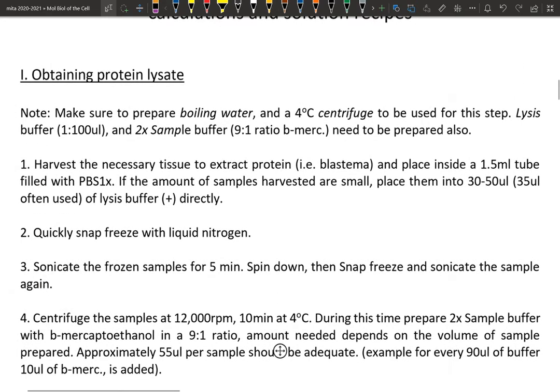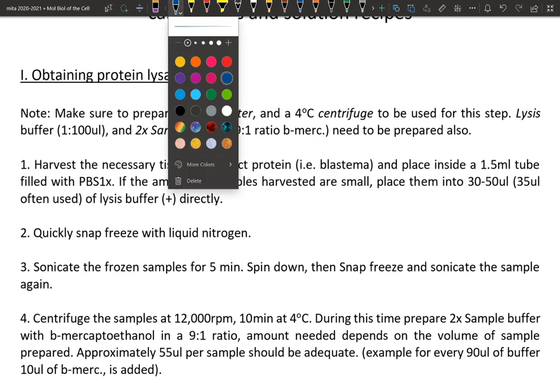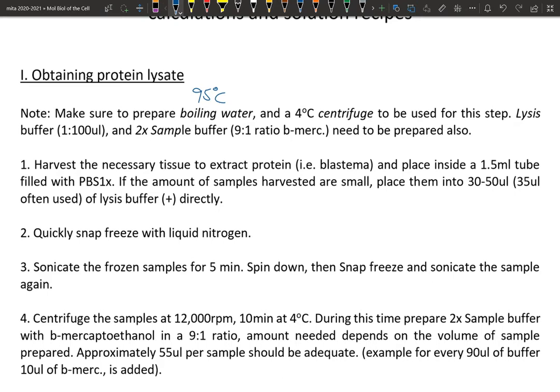The first thing is obtaining a protein lysate. Beforehand, you want to prepare boiling water, or more specifically 95 degrees Celsius water, and also a 4°C centrifuge. Start getting the centrifuge to 4°C beforehand, maybe 15 minutes should be sufficient. Prepare a lysis buffer and a 2x sample buffer.